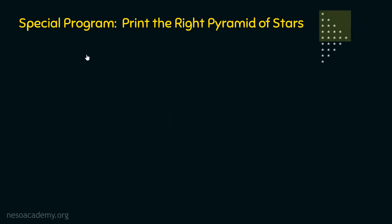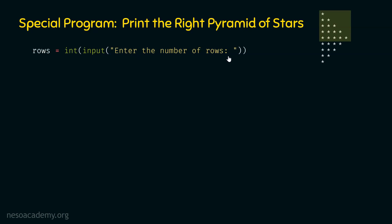First, we need to ask the user to enter the number of rows. We will use the input method and pass it to the int method, so that the string returned by the input method is converted to an integer, which we assign to a variable. This line of code takes care of everything — we pass the prompt 'enter the number of rows' to the input method, receive the user's input, convert it to integer, and the rows variable will point to that integer.